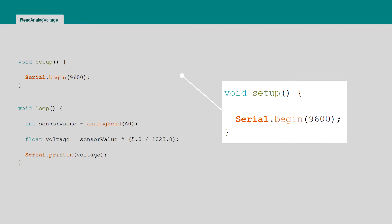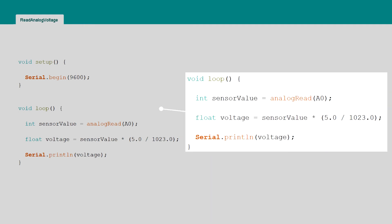In the setup function, serial communication is initialized. At the start of the loop, the voltage divider output is measured with the analog read function. The output is stored to the variable sensor value.